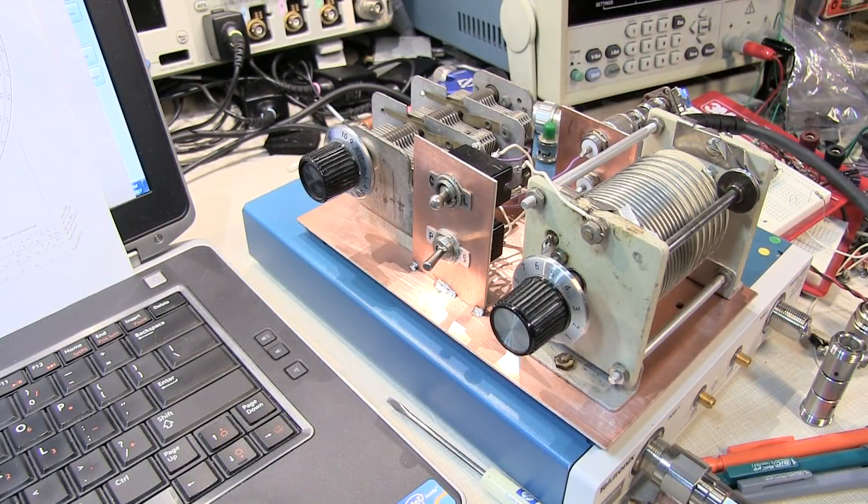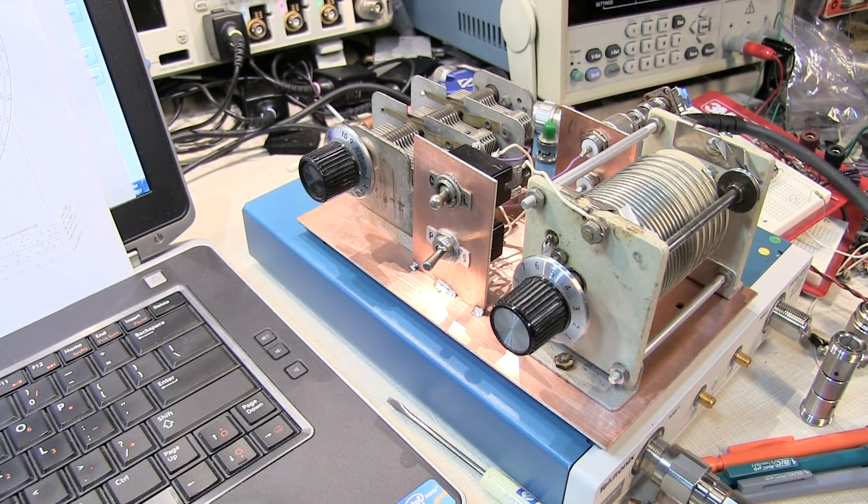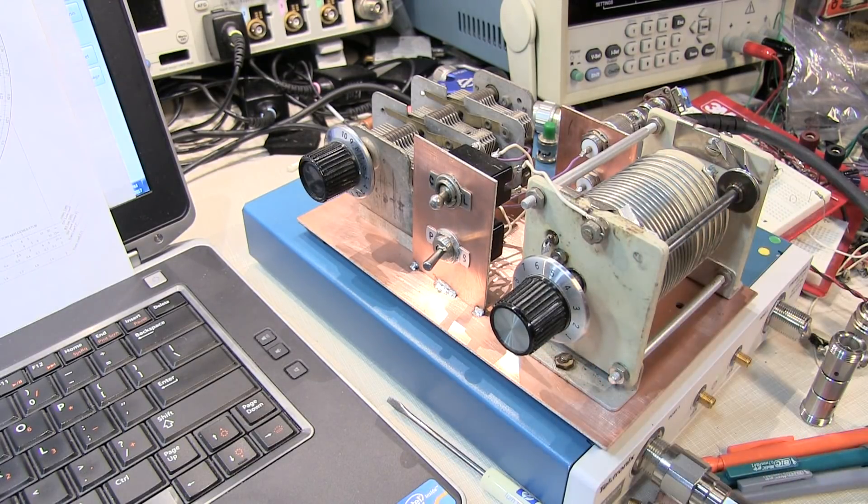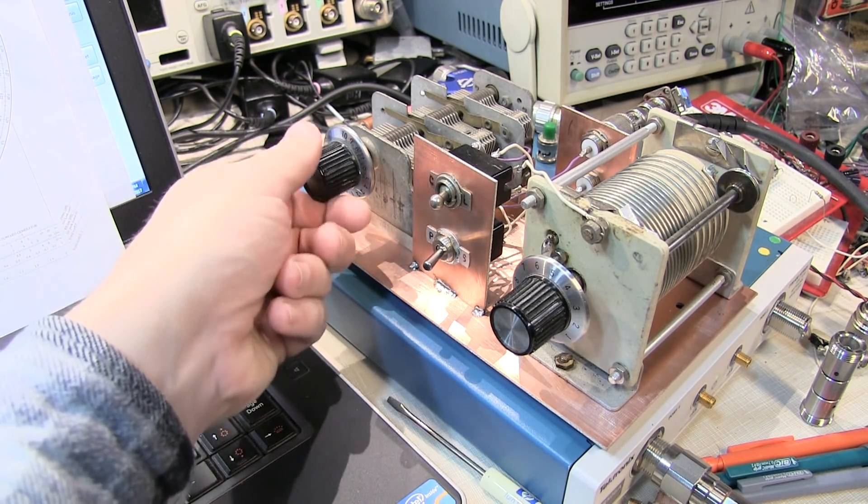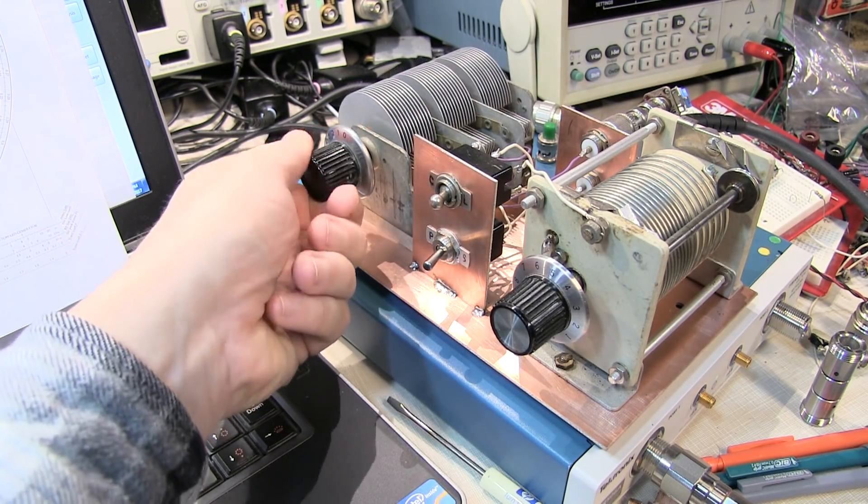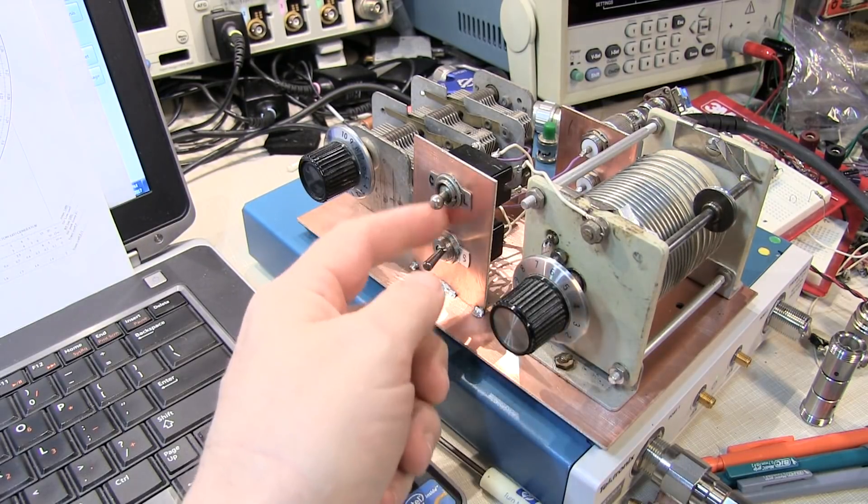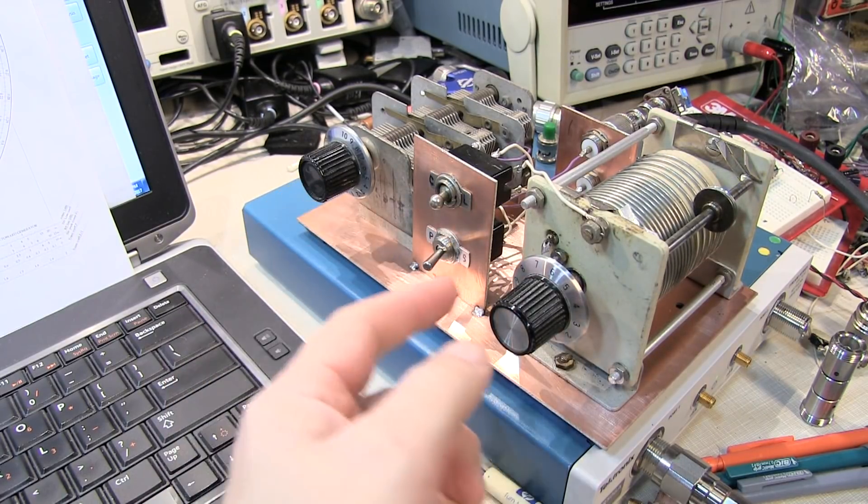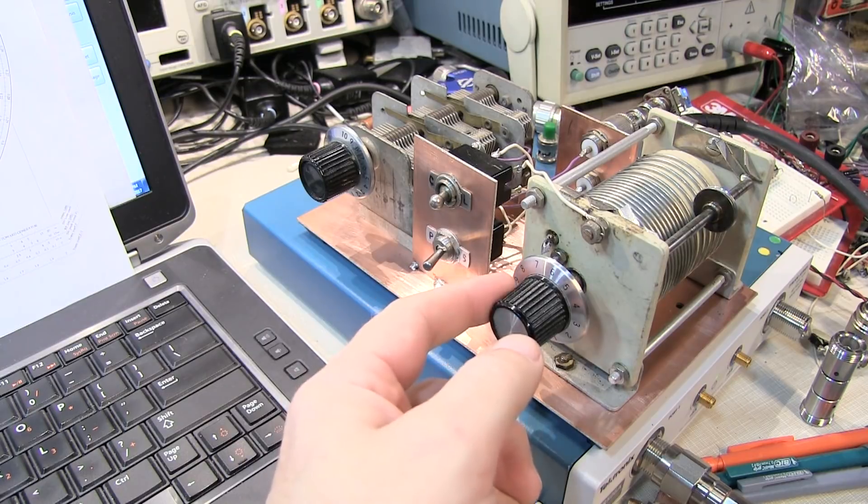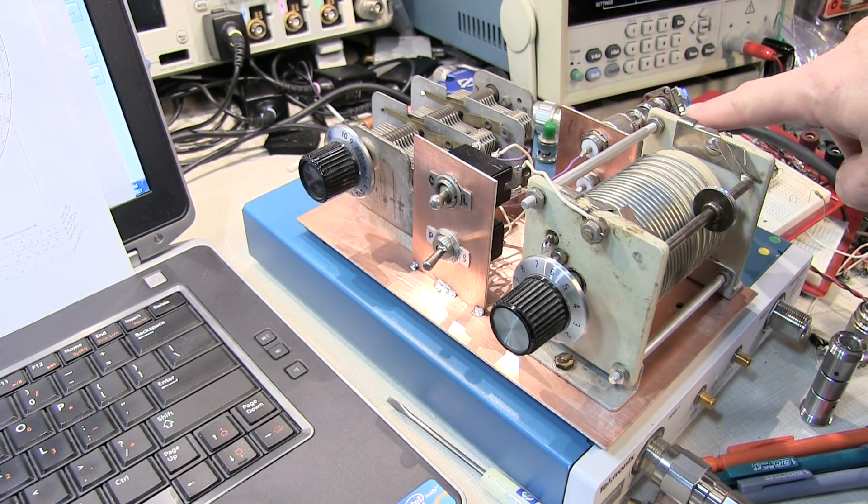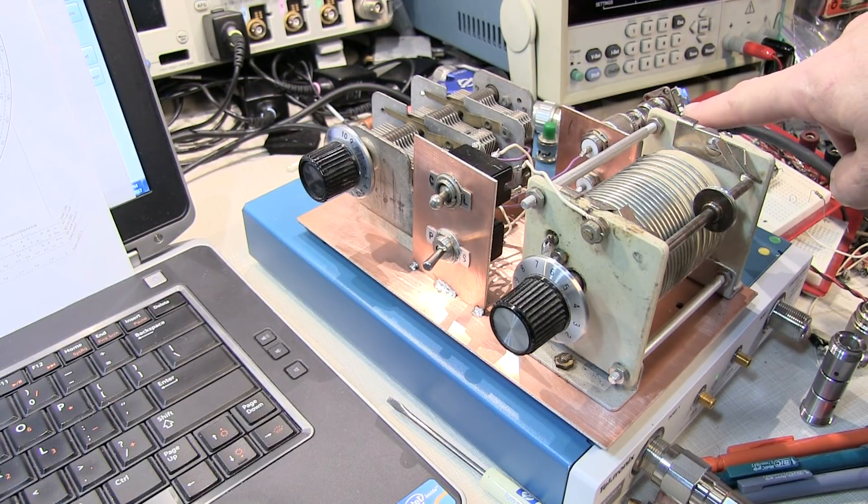In order to help visualize the impedance on the Smith chart, we're going to use the vector network analyzer and this relatively large overscaled circuit, which consists of a large variable capacitor, a variable inductor, and a series of switches that allow me to put the inductor or capacitor in series or in parallel with the load.